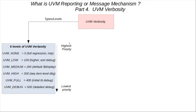As discussed, the priority is highest for UVM None and reduces as we go along — UVM Debug has the lowest priority. If, for instance, the testbench UVM verbosity level is set to UVM Medium, then all the UVM info messages that have a verbosity of UVM None, Low, and Medium will get printed out.